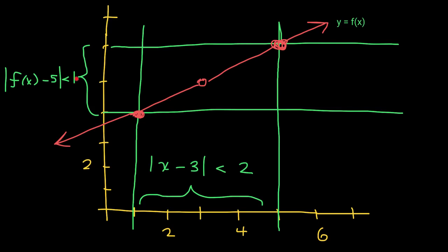I just chose this number at random. I said I want all of the function values to be within one unit from the limit. We found that in order for that to happen, you need to choose x values that are within two units from 3. In general, we need to find this number, which we're going to call delta, the Greek letter delta.